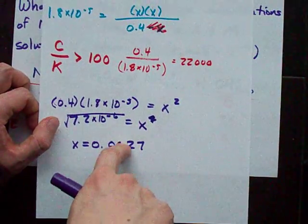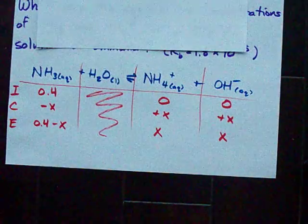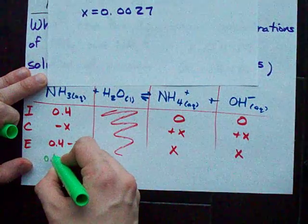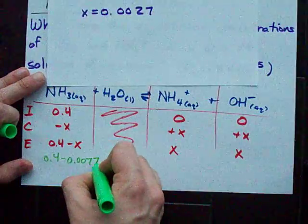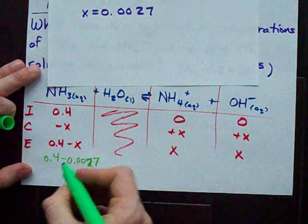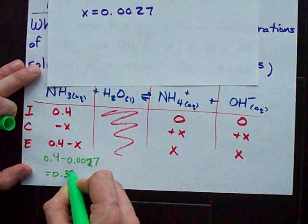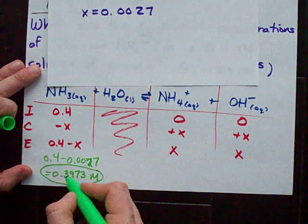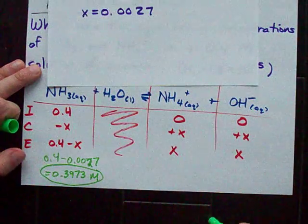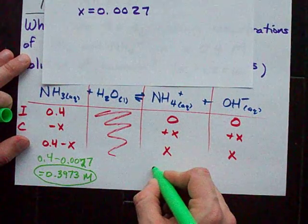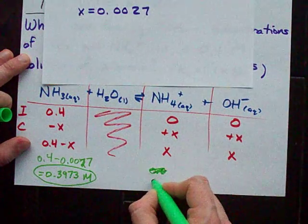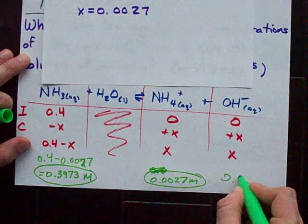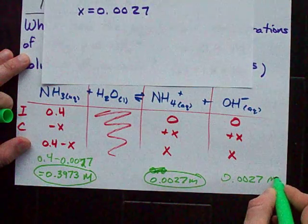And so my equilibrium concentrations are, like we said here, NH3, the equilibrium concentration was 0.4 minus x, which we've said is 0.0027. On my calculator, that leaves you with 0.3973 moles per liter of ammonia. Again, take a look at how close that is to actually being 0.4 that you started with. The NH4 is x, so the equilibrium concentration of that is 0.0027 moles per liter. And the equilibrium concentration of hydroxide, even though the question didn't ask for it, is 0.027 moles per liter.